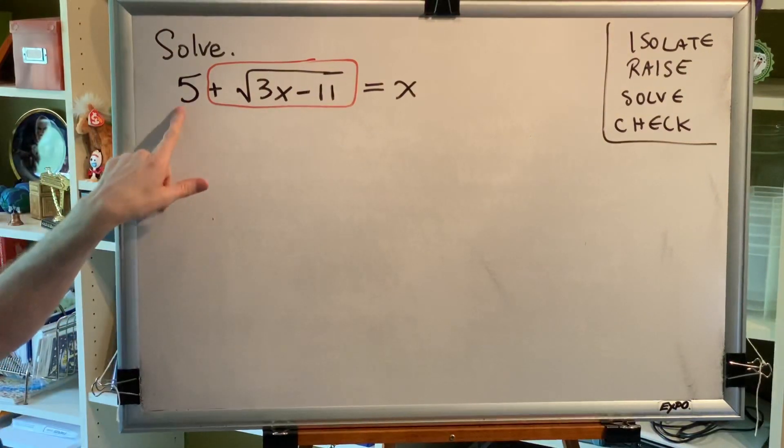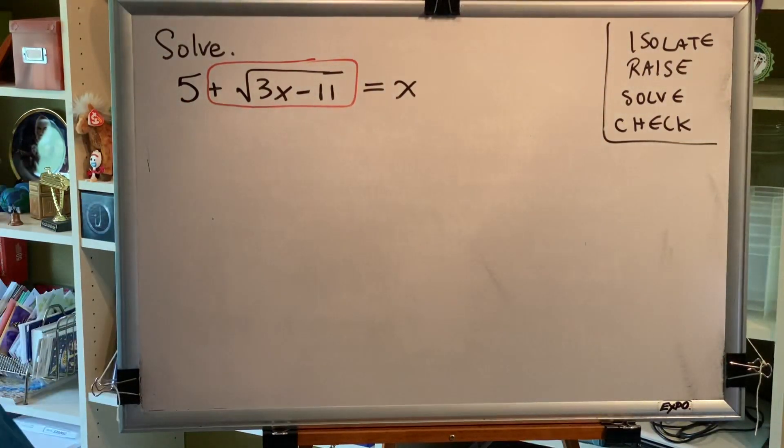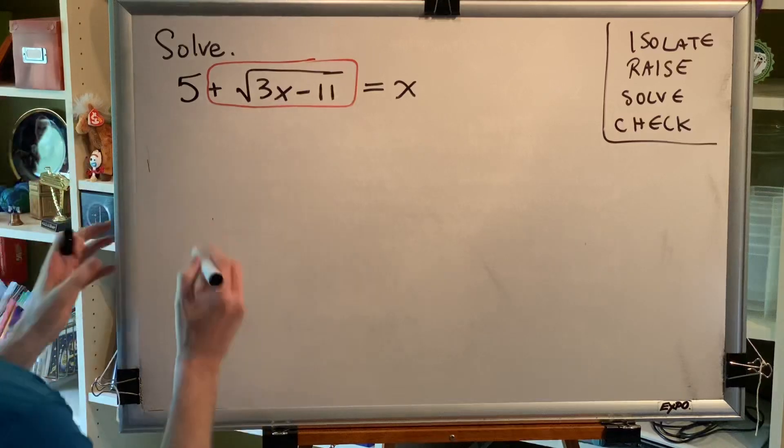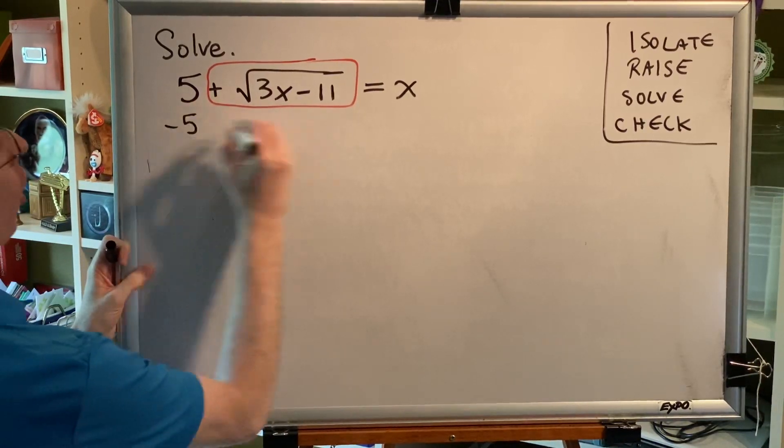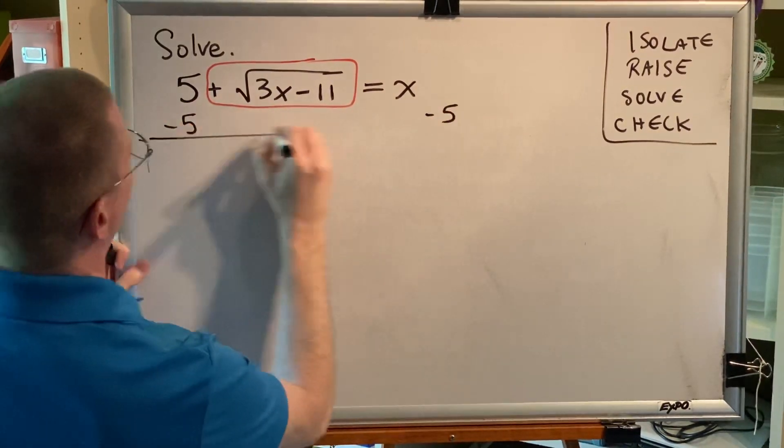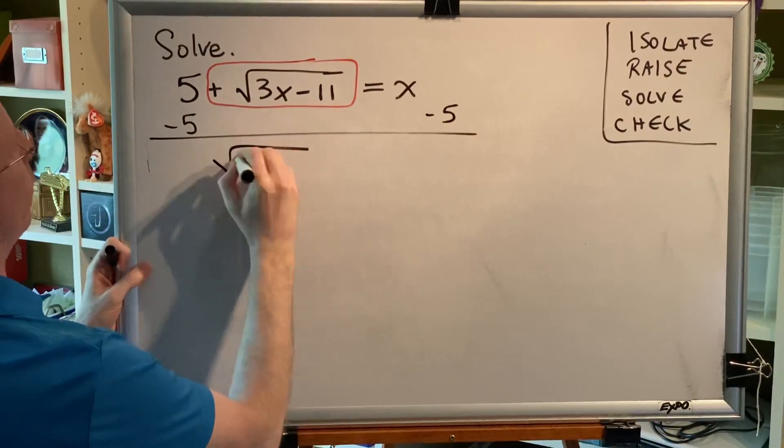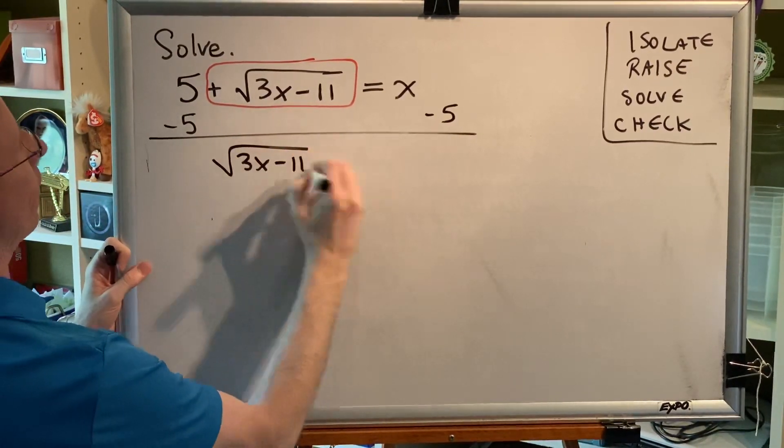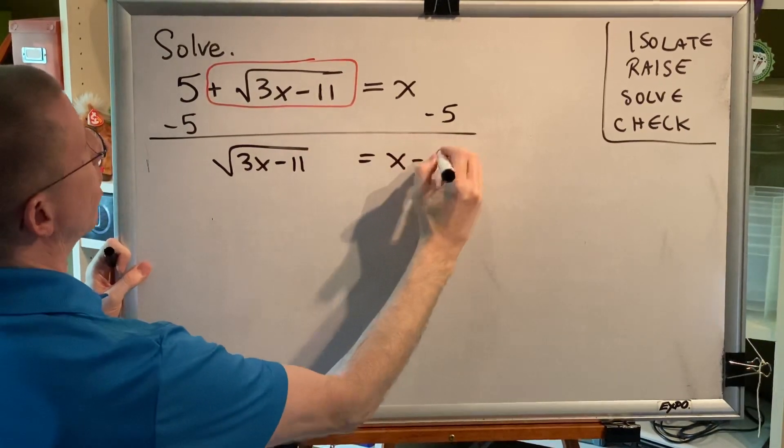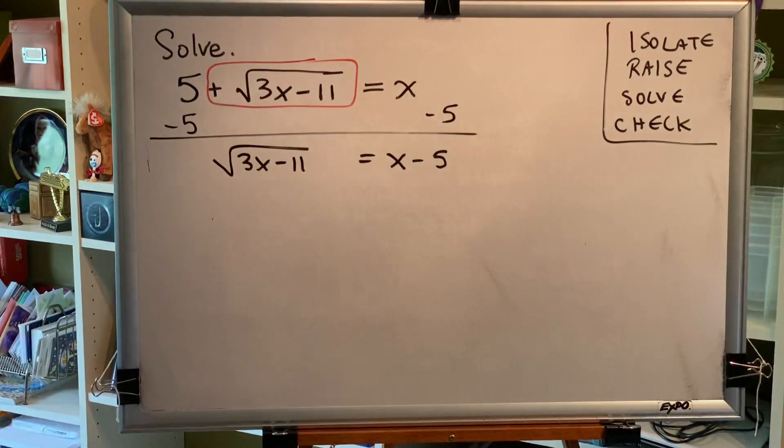We can see that we've got this 5 adding to the radical, and the only way we can get rid of that is with subtraction. So we're going to subtract 5 on both sides. Then we will have the principal square root of the difference 3x minus 11 equals x minus 5. This radical is now isolated.